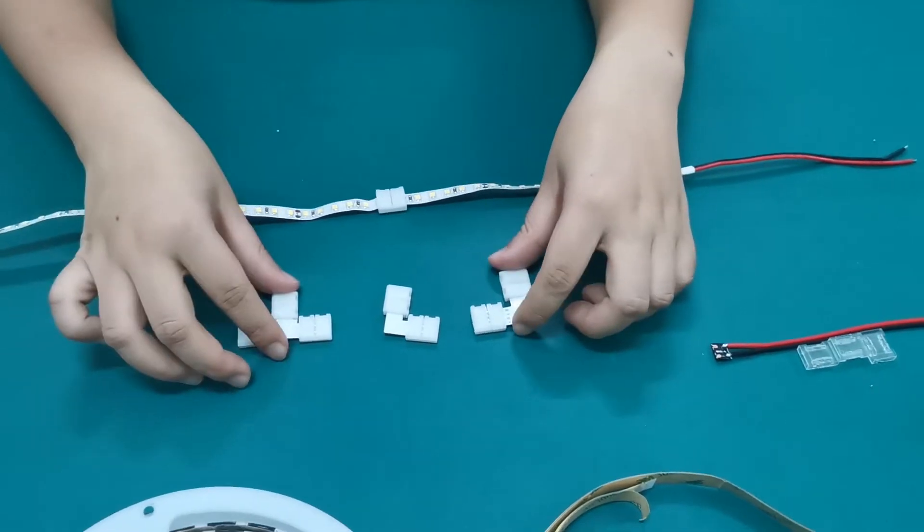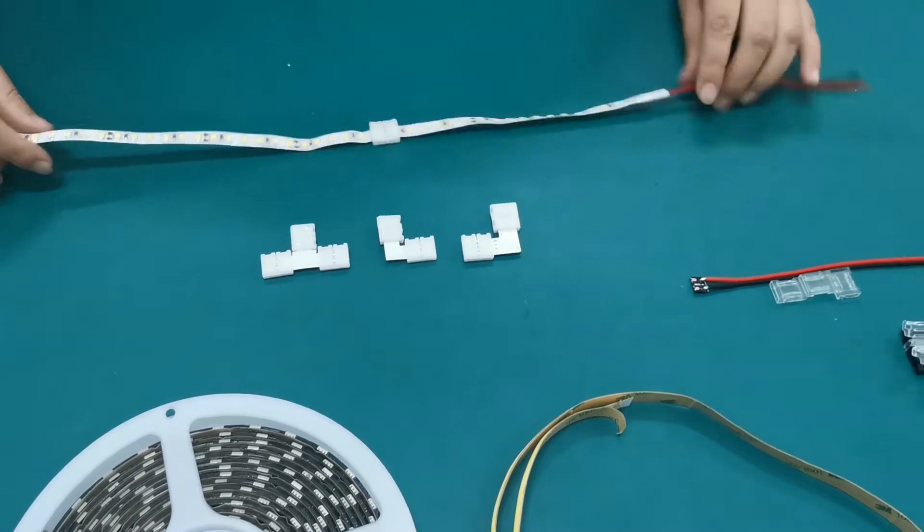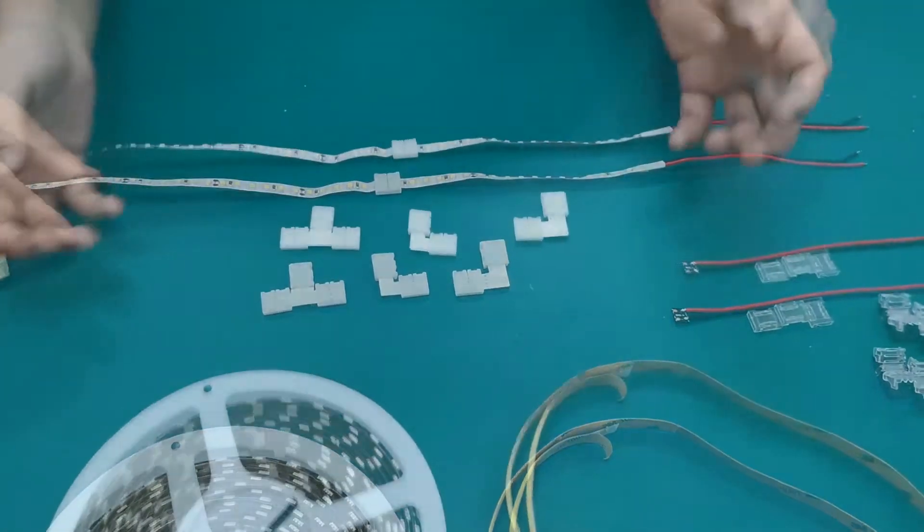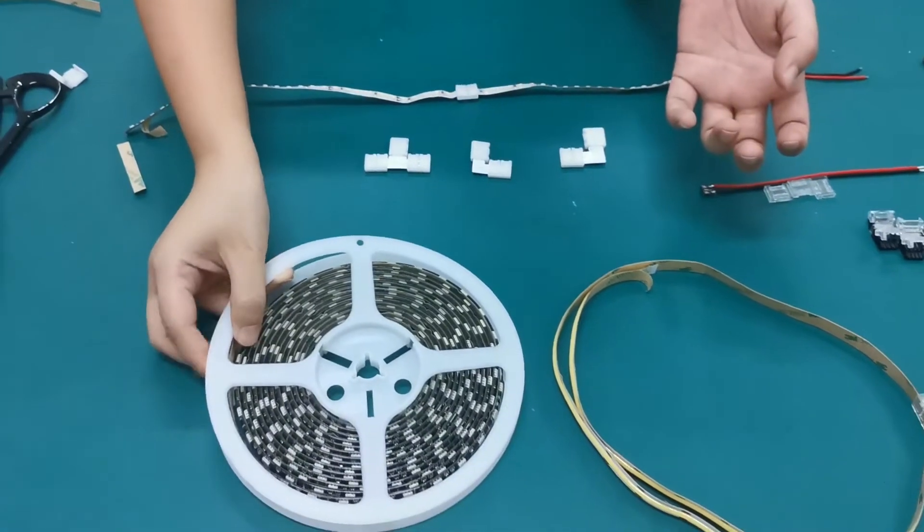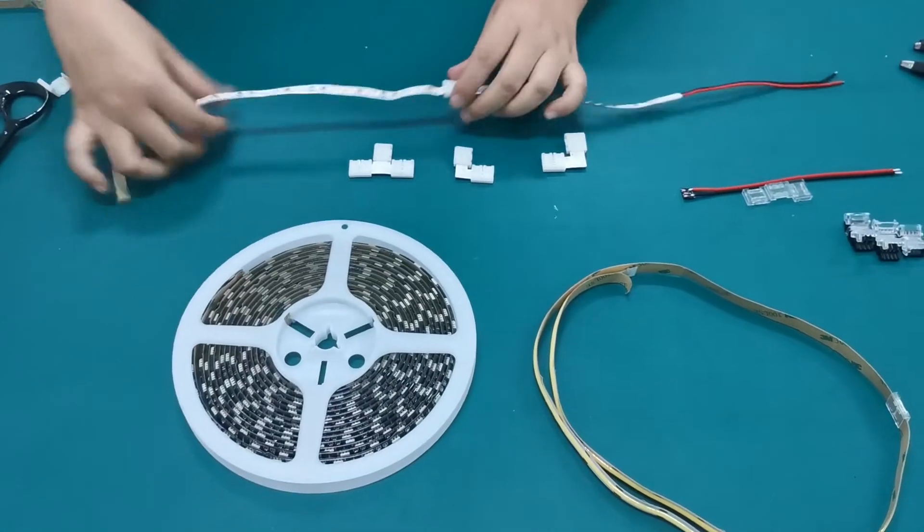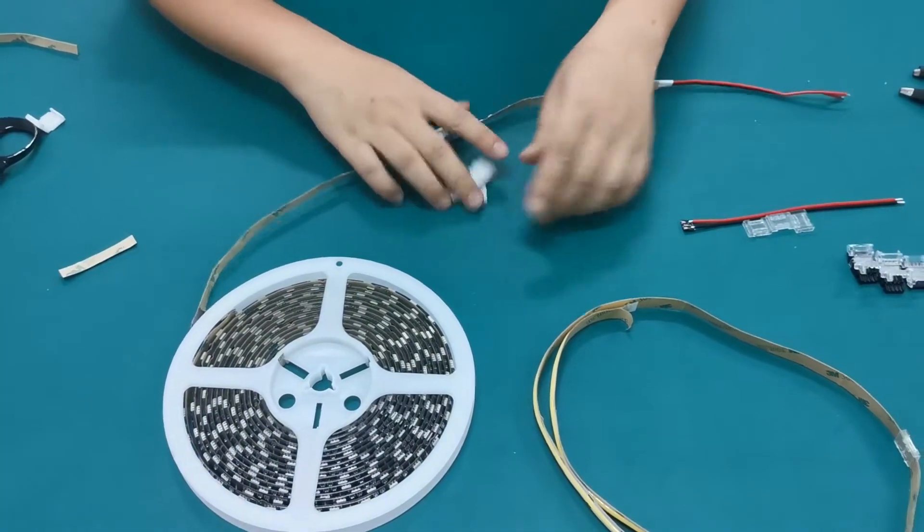So when you want to buy something, you must be very clear to know what is the strip you want. Some customers will say, how to connect the waterproof type? Because the non-waterproof type is very easy. So how to connect the waterproof?